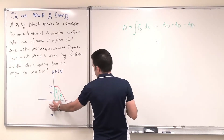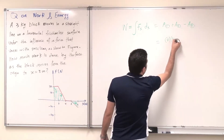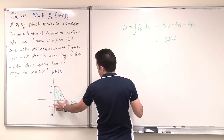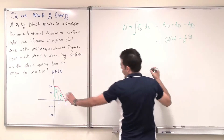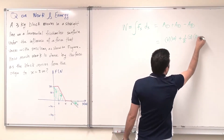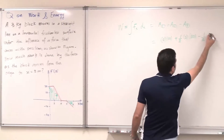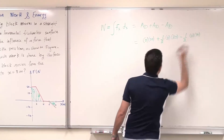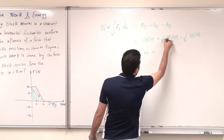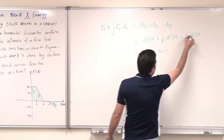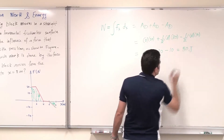The first area is the base by the height: two by 20. Then half the base by the height for the triangle: half of two by 20. Then minus half the base by the height: half of two by 10. As a result, this will be 40 plus 20 minus 10, which gives 50 joules. Thank you.